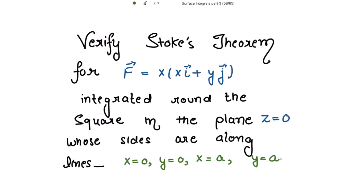We need to verify the Stokes theorem for this function, integrated round the square in the plane z equal to 0, whose sides are along the lines x equal to 0, y equal to 0, x equal to a, y equal to a, forming this square. To verify the Stokes theorem, we need to show that the left-hand side — the line integral of F vector dot dr vector — equals the right-hand side: the surface integral of curl of F vector dot n vector ds. If these two values are equal, the Stokes theorem is verified.